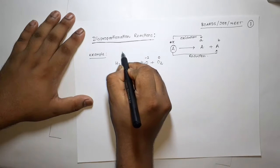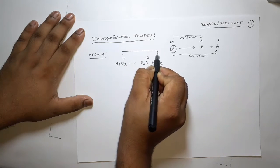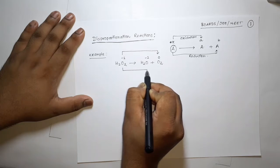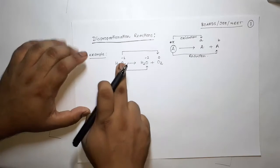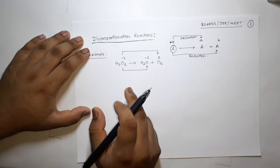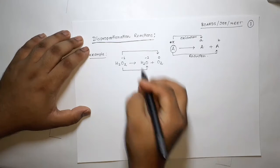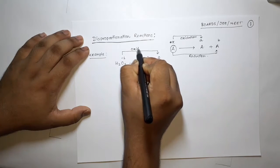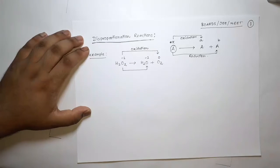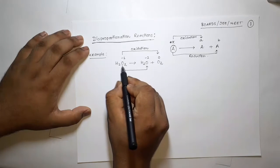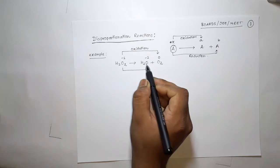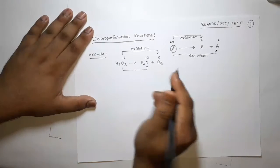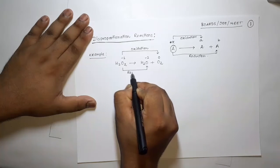You can find that in one place the oxidation state of oxygen goes from minus 1 to 0 — it is releasing electrons, so this process is called oxidation. In another molecule, oxygen goes from minus 1 to minus 2 — it is gaining electrons, so this process is called reduction.